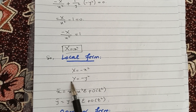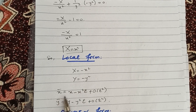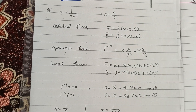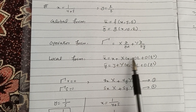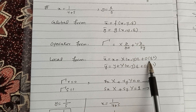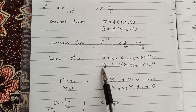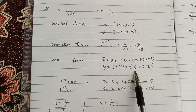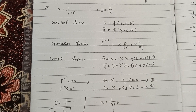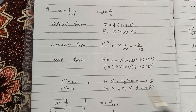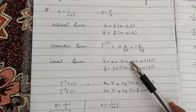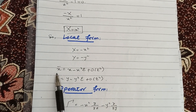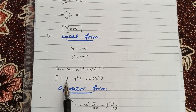The local form is given by x̄ = x + X·ε + O(ε²) and ȳ = y + Y·ε + O(ε²). Substituting the values of capital X and capital Y, we obtain the local form of the Lie group.